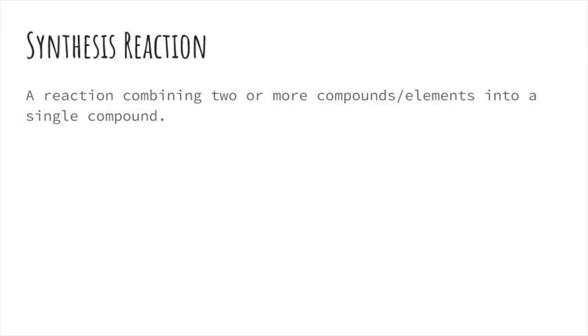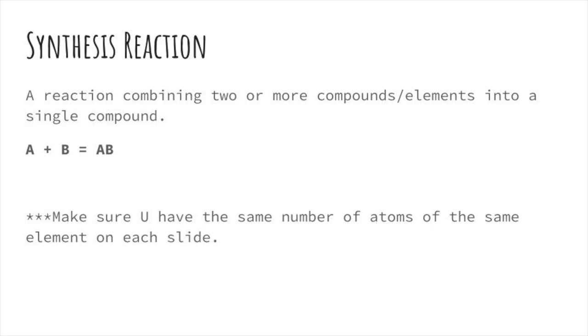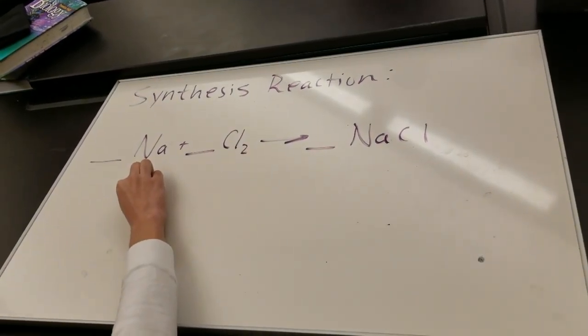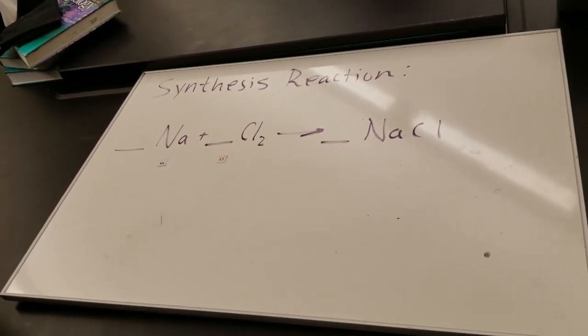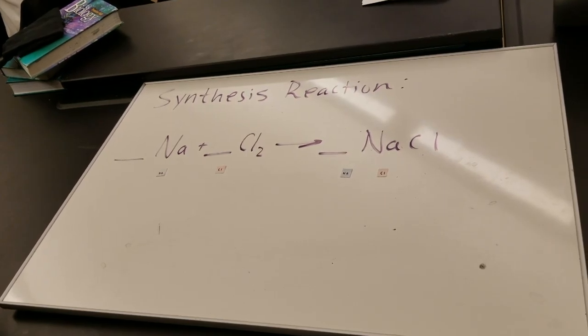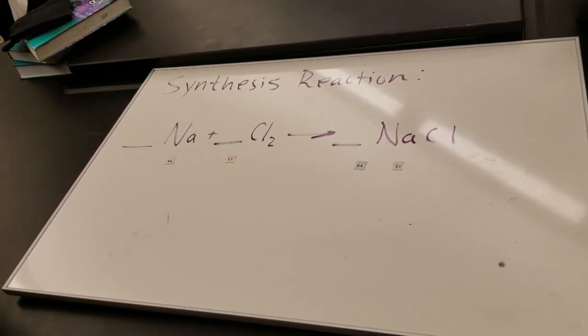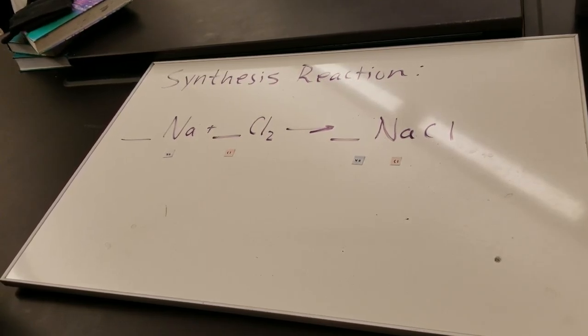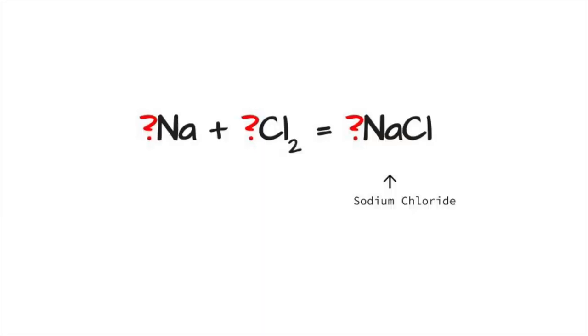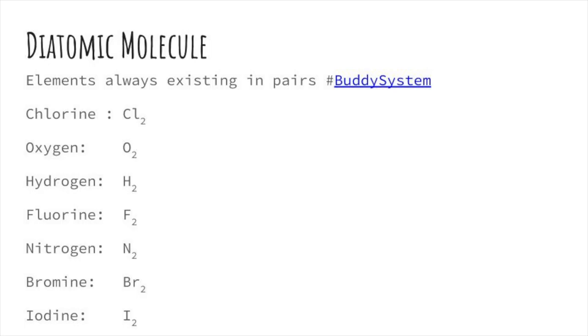For example, here we have a synthesis reaction. A synthesis reaction is a reaction combining two or more compounds elements into a single compound. You need to make sure that you have the same number of items of the same elements on each side. Na and Cl2 are being combined, producing sodium chloride. Note that Cl2 is a diatomic molecule, meaning that this element always comes in pairs in natural environments.